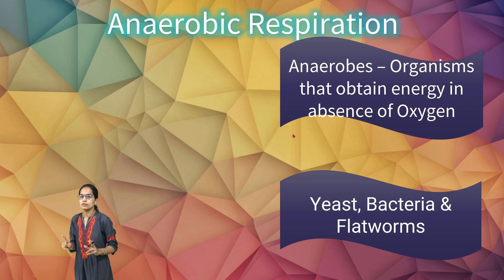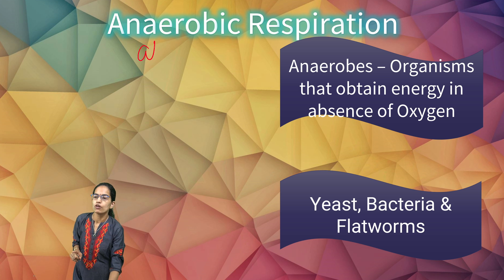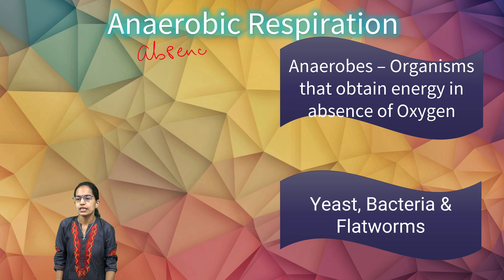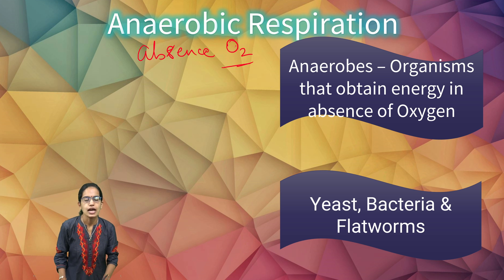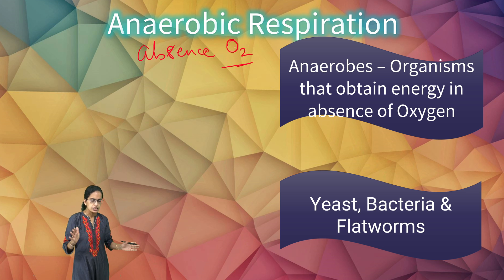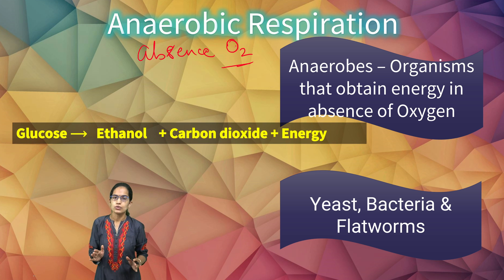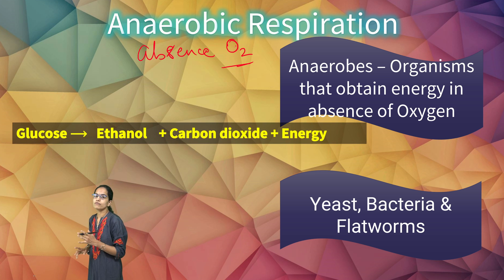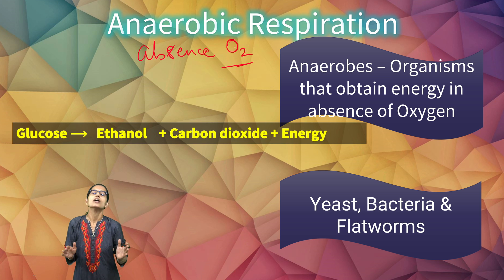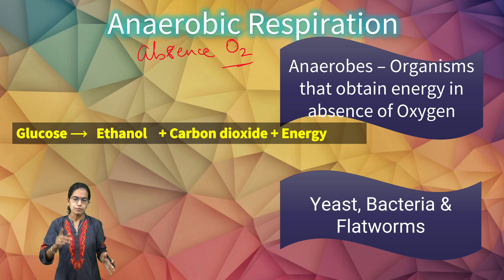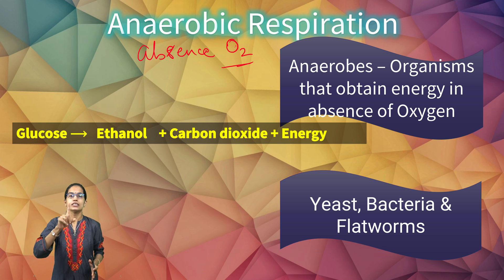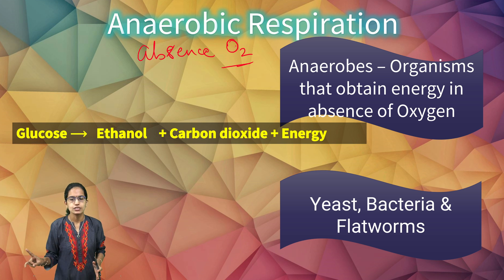Anaerobic respiration, which occurs in the absence of oxygen, can take place in two ways — one in plants and the other in animals. In plants, glucose is broken down into ethyl alcohol, also called ethanol, carbon dioxide, and energy. The energy produced by anaerobic respiration is less compared to that by aerobic respiration.